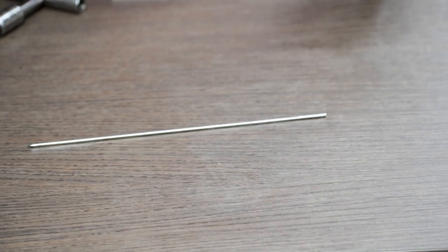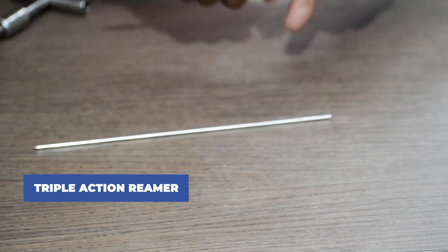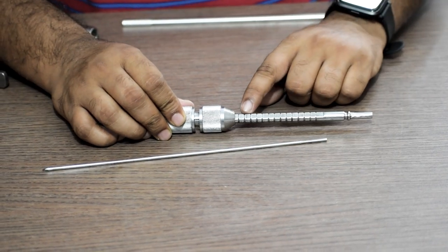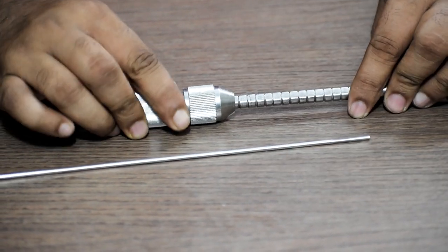Once the measurement is done, we will take a triple action reamer and set the reamer to the exact length that we have measured using the measuring scale. As you can see here, a demarcation of the length.